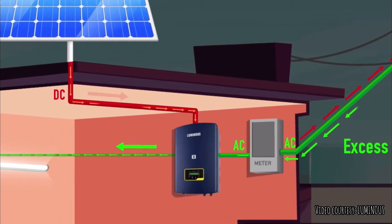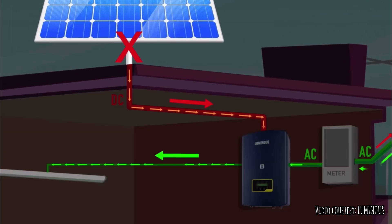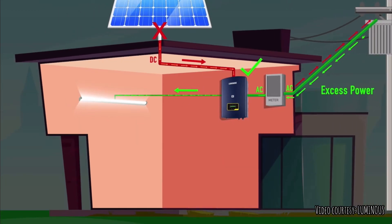However, the on-grid system does not work during power outages. So while it is cost-effective, it is best used in places where the power cuts are minimal.